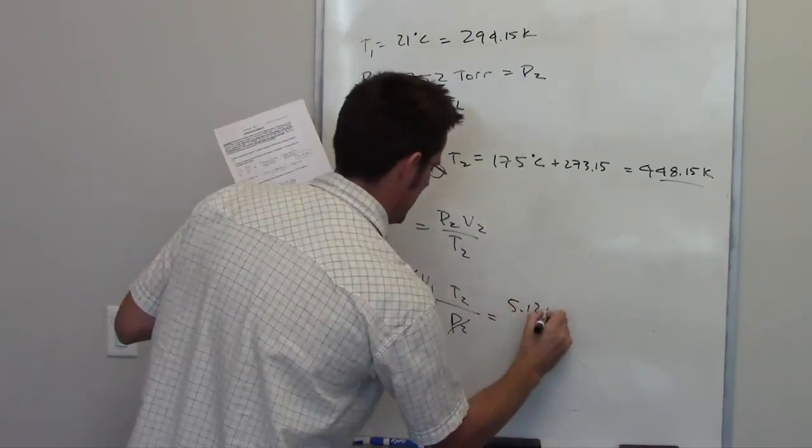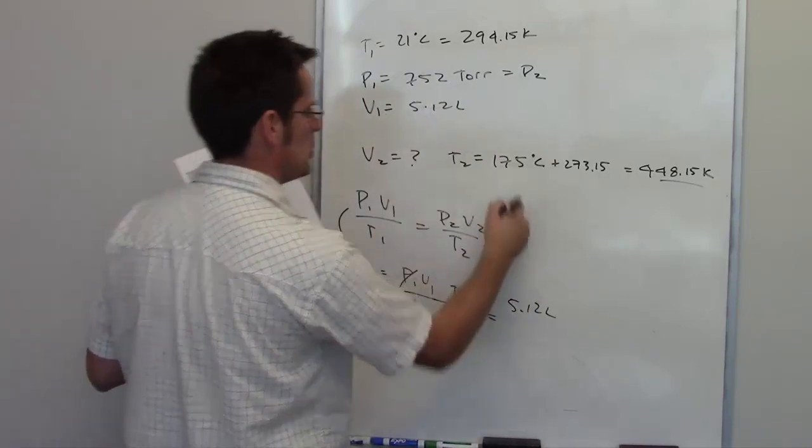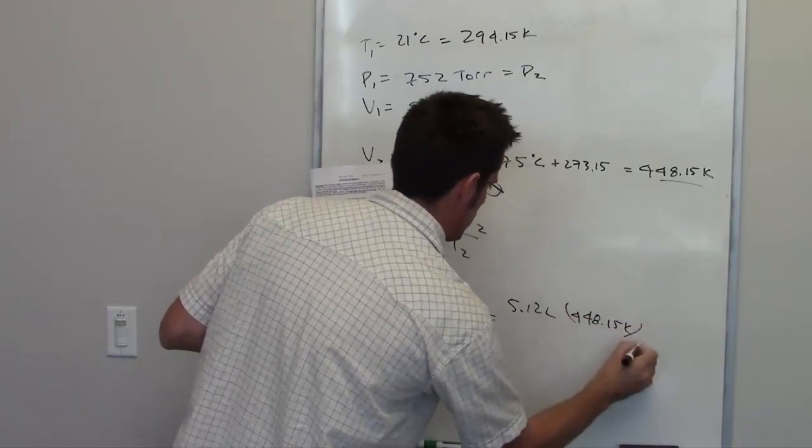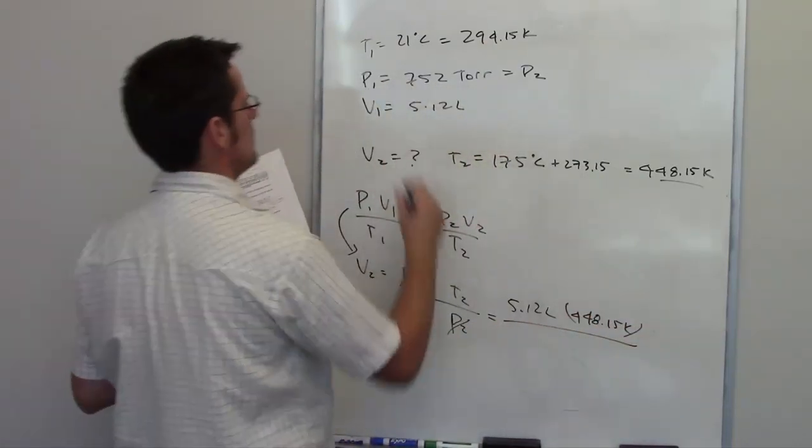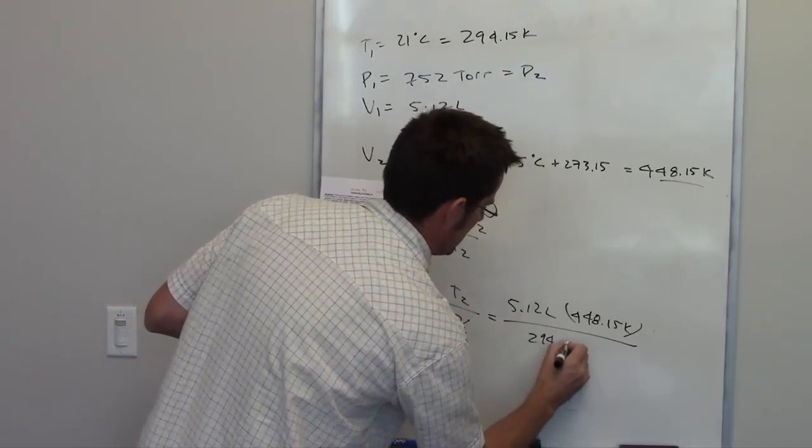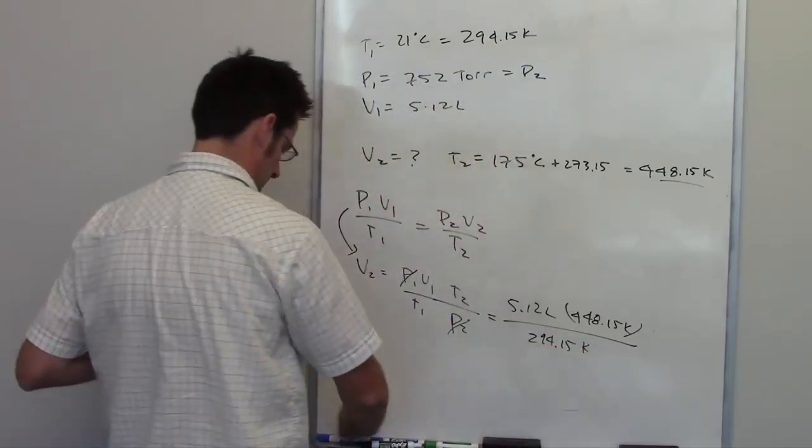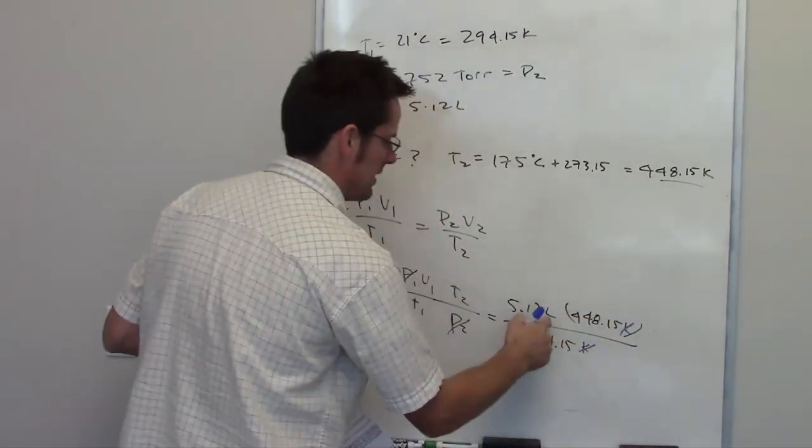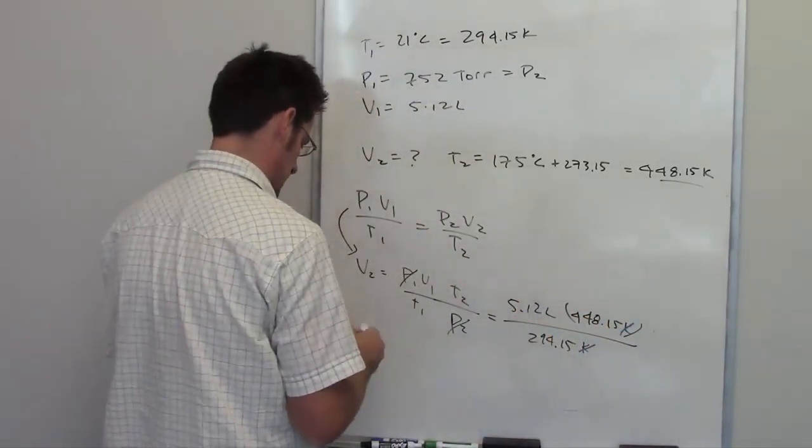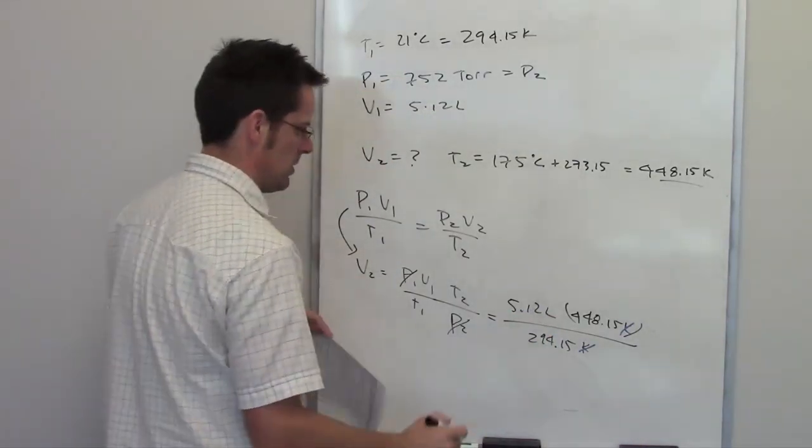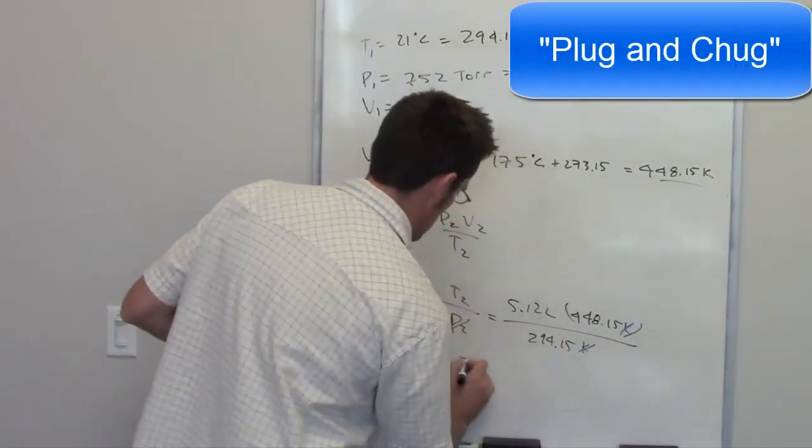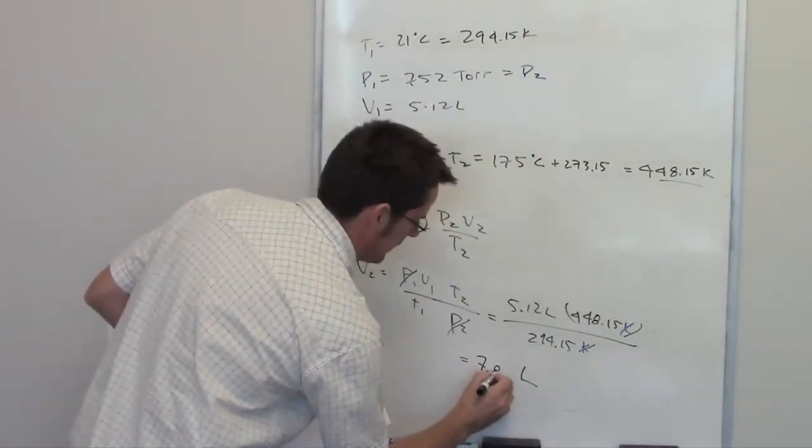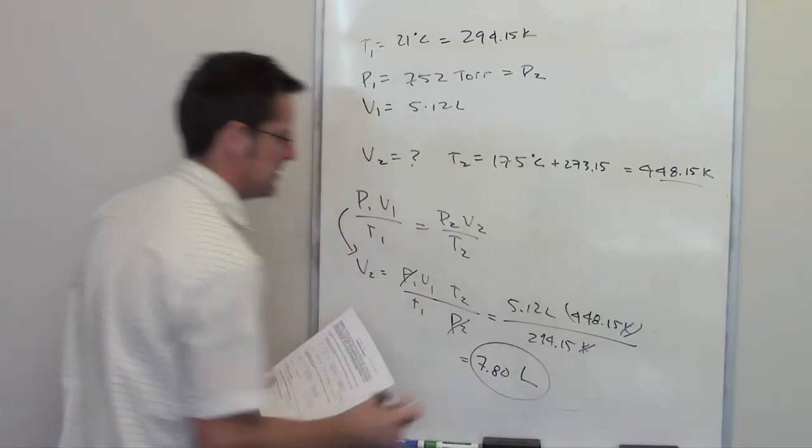So what I have left then is V1, 5.12 liters, multiplied by T2, which is 448.15 kelvins, divided by T1, which is 294.15 kelvins. The units should all cancel each other out, leaving me behind the units that I want. The kelvins do cancel each other out, and they leave me behind units of liters. That is a correct unit for volume, so everything should be okay. Now it's just plug and chug. When I throw that into my calculator, the answer that I end up getting is, with the proper number of significant figures, 7.80 liters.